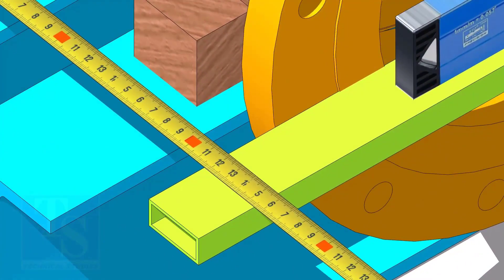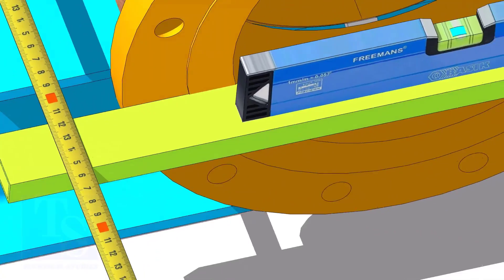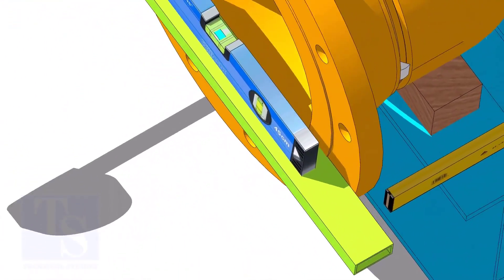Check the length of the spool on both sides. If the dimensions are equal or at an acceptable limit, tack weld on both sides.